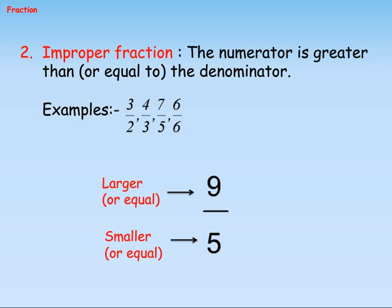Type two: Improper fraction — the numerator is greater than or equal to the denominator. Examples: 3/2, 4/3, 7/5, 6/6. In 9/5, nine is larger or equal and five is smaller or equal.